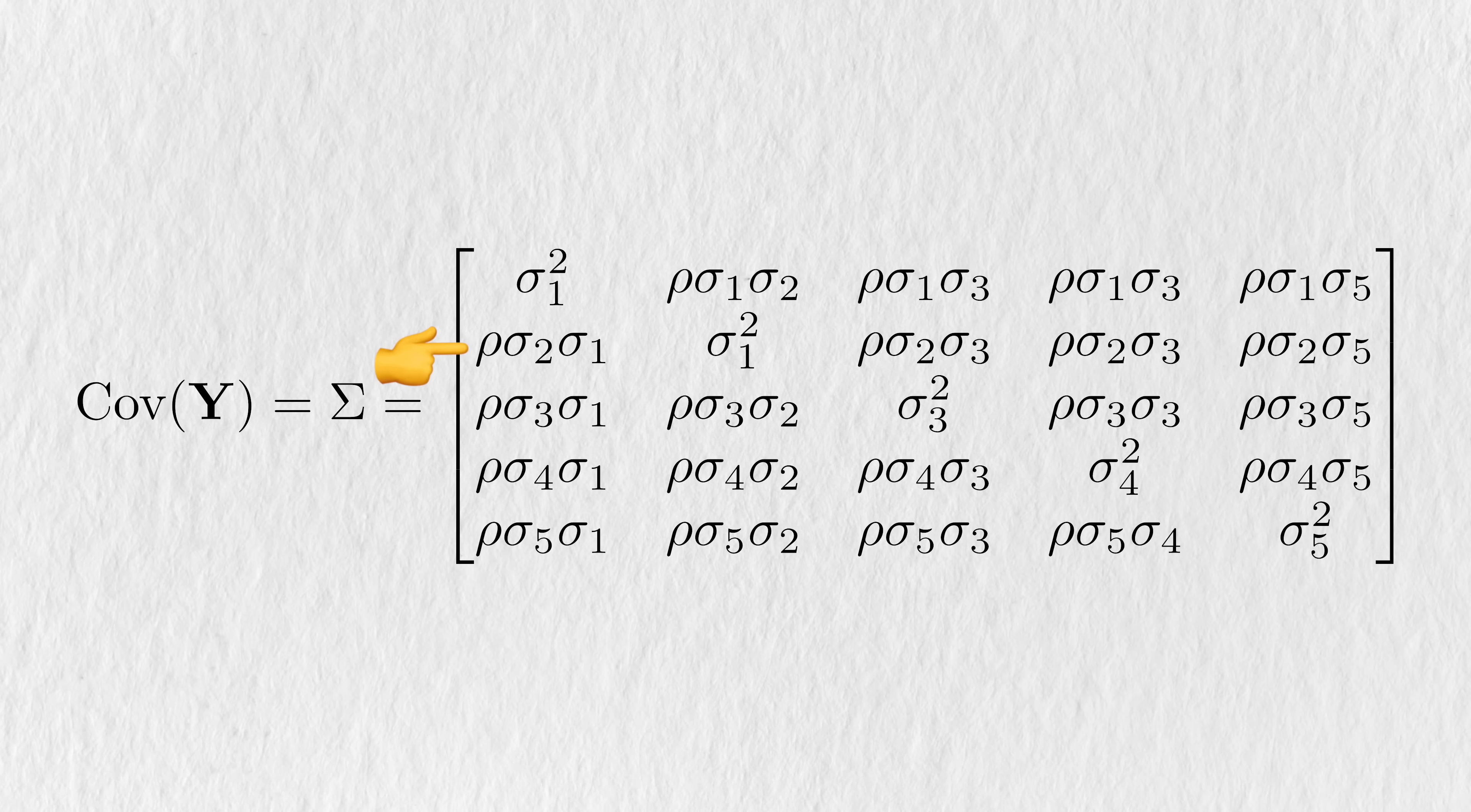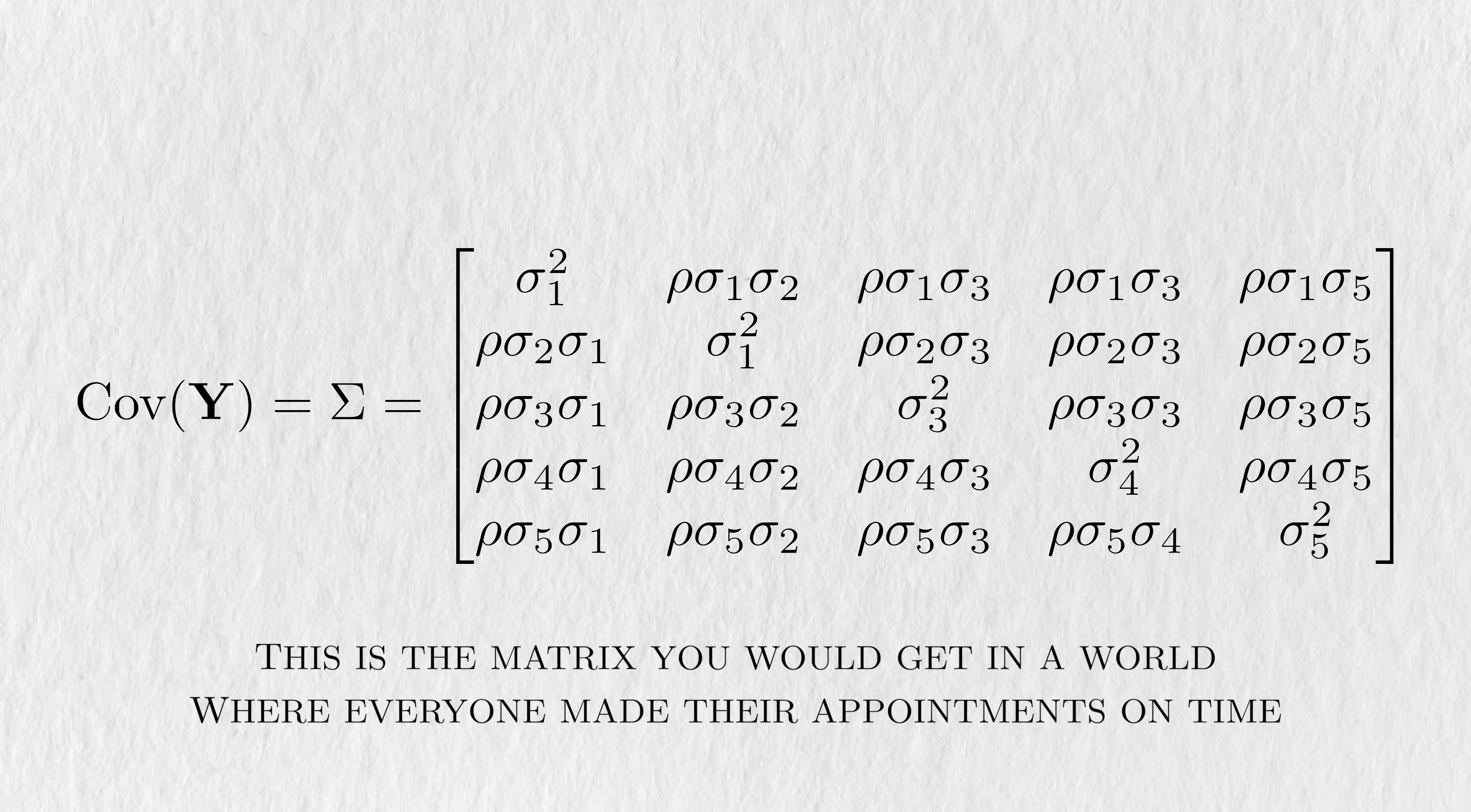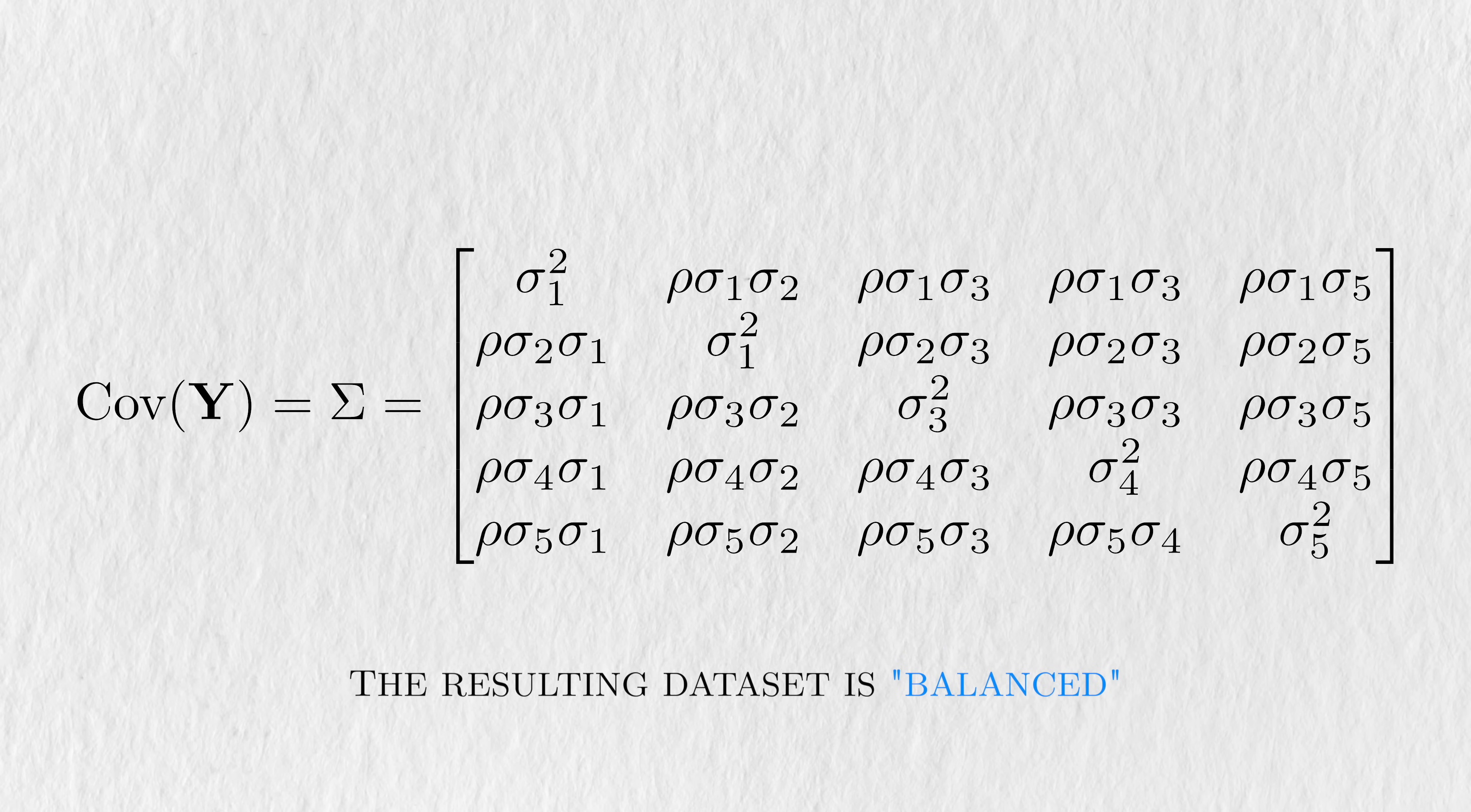For instance, this element in the matrix corresponds to a correlation between the baseline observation and three-month observation. This is the correlation matrix you would get in this perfect world where we gather data from everyone at the exact same time points. We would refer to this data set as balanced.